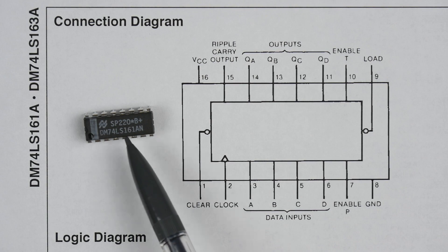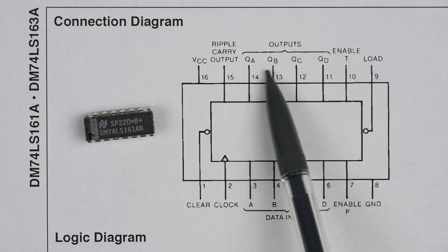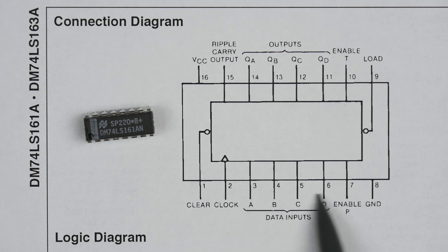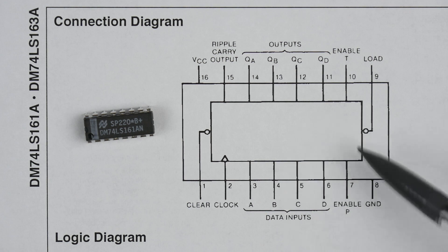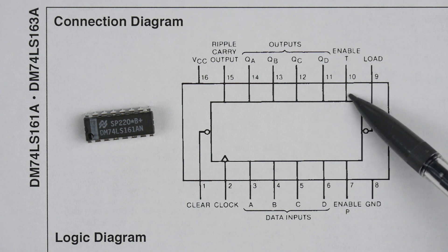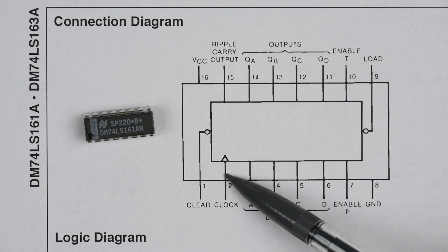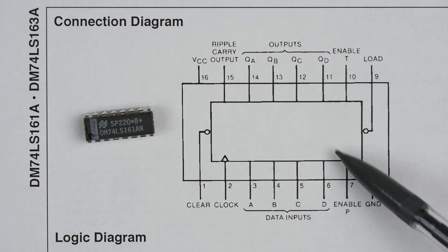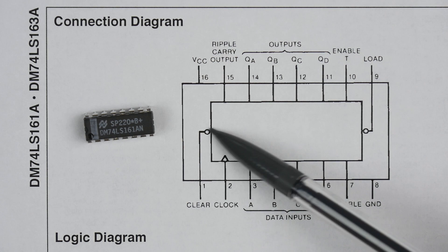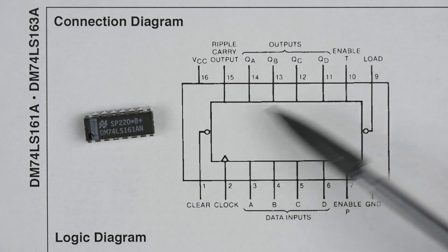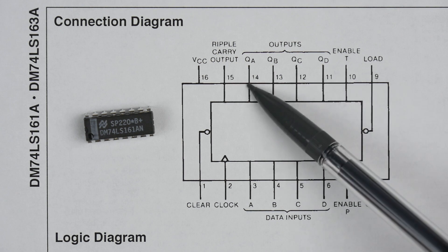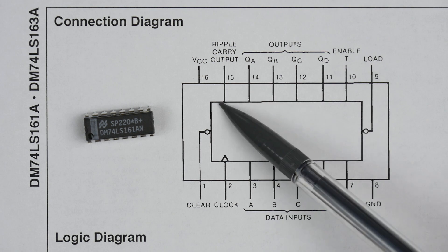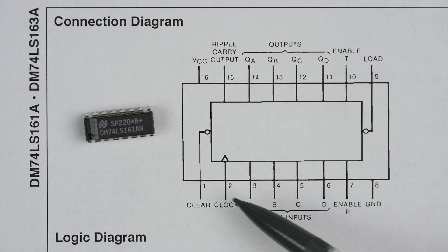To summarize the functionality of the 74LS161: it has four outputs and four inputs we can use to load an arbitrary value using the load signal. It has enable signals to control whether it's counting, and a clock input — with enables active, it counts on each pulse. It also has a clear that resets it to zero, which is handy. Finally, there's a ripple carry output: since this is a 4-bit counter, if we wanted an 8-bit counter or more, we can cascade these by feeding the ripple carry out into the clock of the next chip.